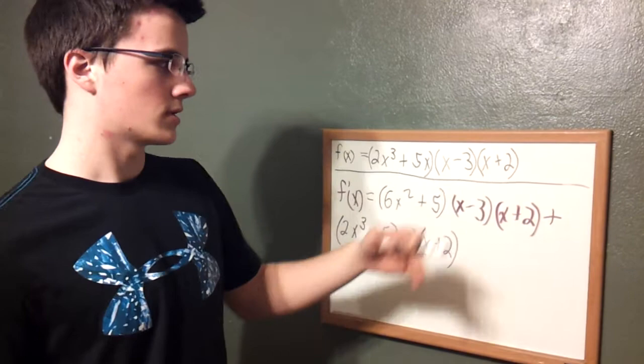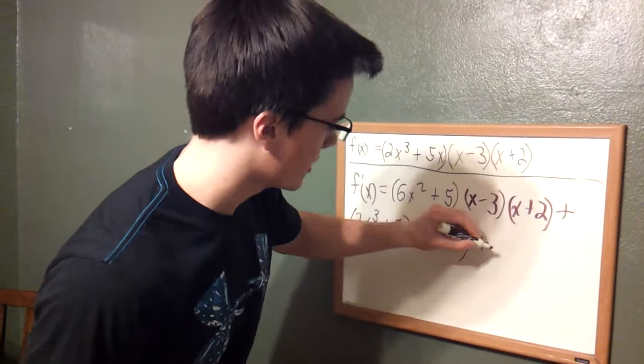Now after that, to take the derivative of x plus 2, it is also just 1 since the derivative of x is 1 and plus 2 is also a constant, so it will cancel out.